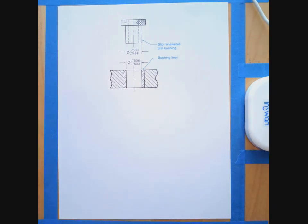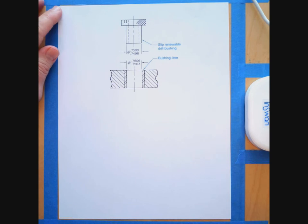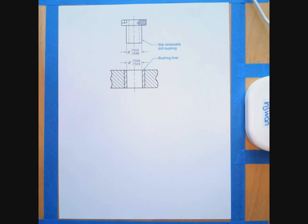Let's run through a couple of examples of calculating the fit between parts. I'm going to use as a basis for the work here the problems in the book. They look at a clearance calculation, an interference calculation, and a transition fit calculation.